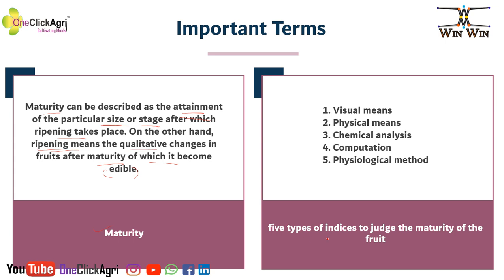There are five types of indices to judge the maturity of fruits. First is visual means. Second, physical means. Third, chemical. Fourth, computation. And fifth, physiological method.